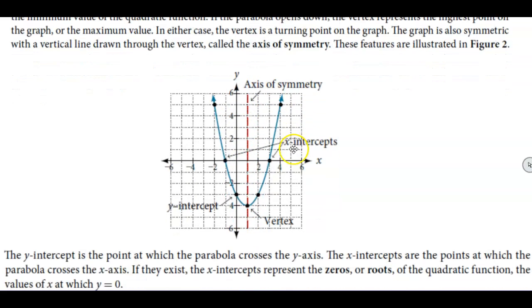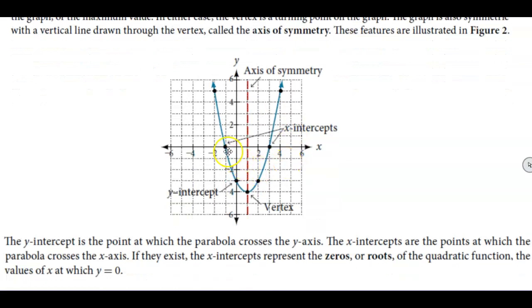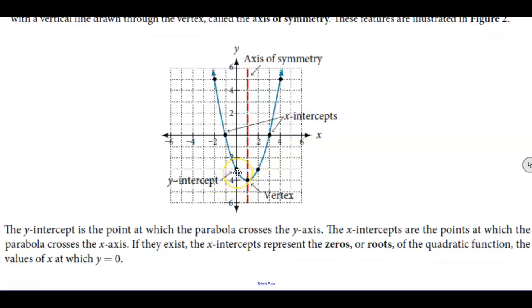You can see that these are the features. So you also have where this parabola crosses the x-axis. In this scenario we have two x-intercepts and then we also have a y-intercept where it crosses the y-axis.